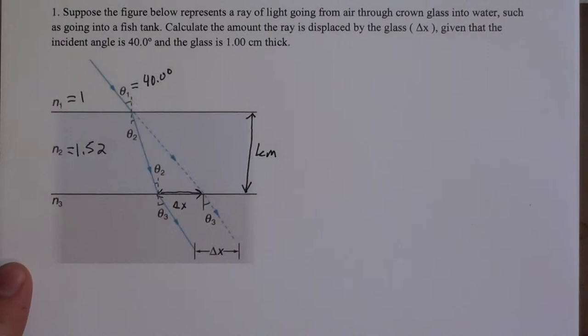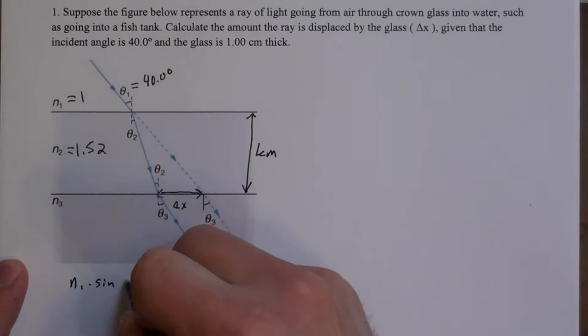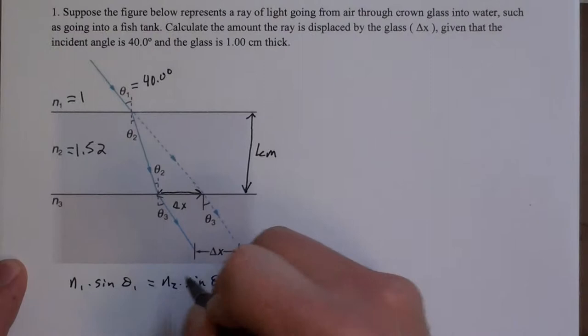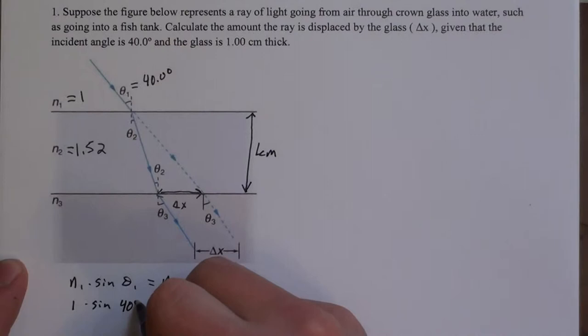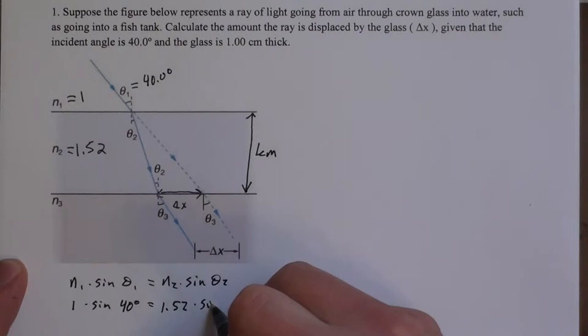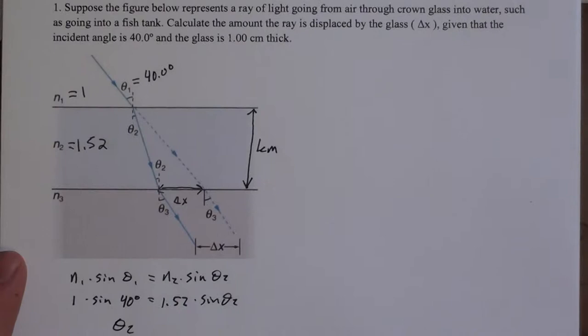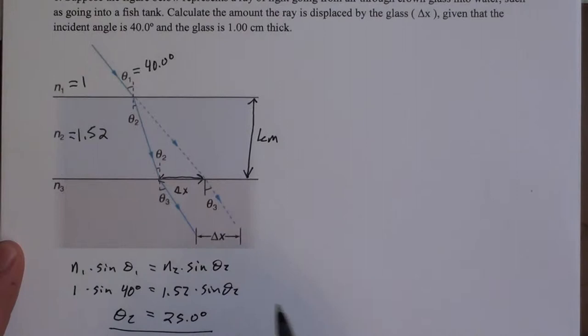Alright, so we can figure out theta 2 using Snell's Law. So we have n1 sine theta 1 equals n2 sine theta 2. Plugging in these numbers, we have 1 for air times sine of 40 degrees, that's the air-side angle, equals 1.52 for glass times sine theta 2. Solving that for theta 2 gets us 25 degrees.